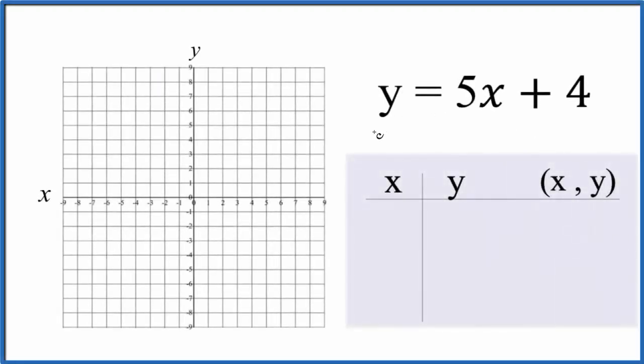Let's graph the equation y equals 5x plus 4, and we'll do it two ways. One, we'll use a table of values where we put values in for x, we get y, and then we graph that. Then we'll check our work with slope-intercept formula. So let's start out.